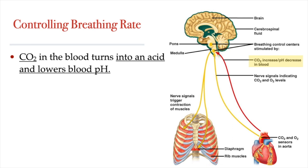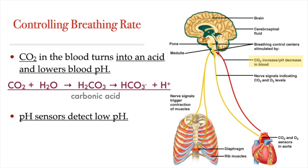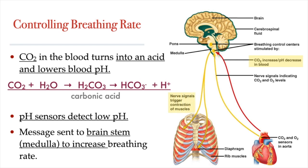It turns out that when carbon dioxide is dissolved in water, like in our bloodstream, some of the molecules of carbon dioxide will react with the water molecules to produce a weak acid called carbonic acid. The more carbon dioxide we have in our blood, the more carbonic acid is produced, and the lower our blood pH. pH sensors found throughout the body can then detect these changes in blood pH. If blood pH is lower, a nervous signal is sent to a part of the brainstem called the medulla, which then sends a nervous signal triggering a higher rate of contraction to the breathing muscles — the diaphragm and the intercostals — thereby increasing our breathing rate.